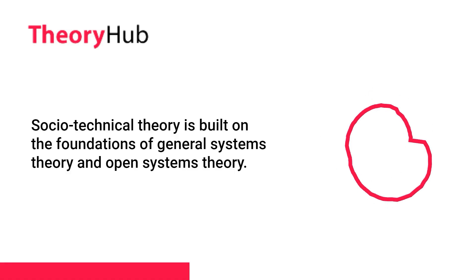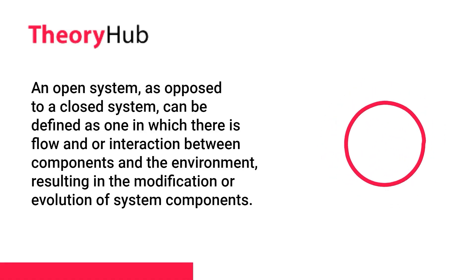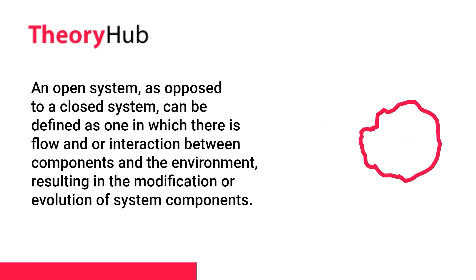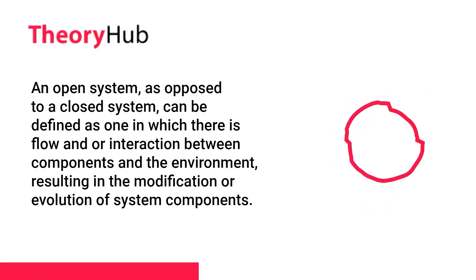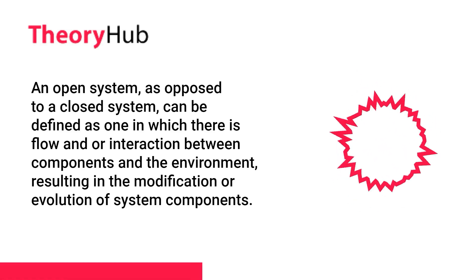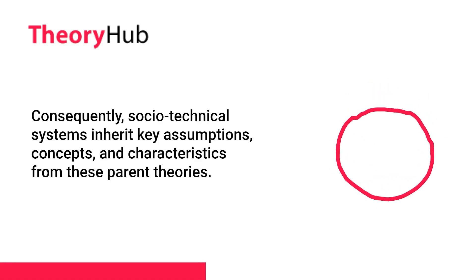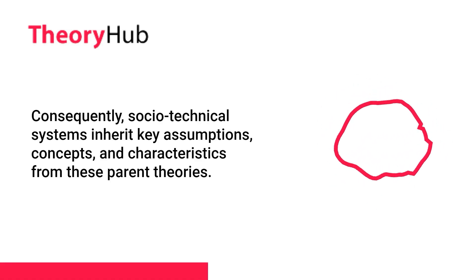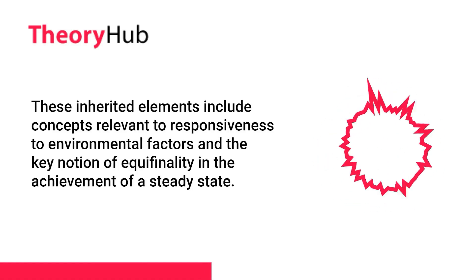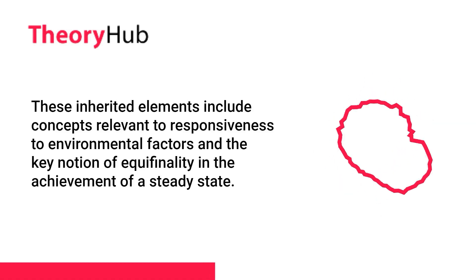Socio-technical theory is built on the foundations of general systems theory and open systems theory. An open system, as opposed to a closed system, can be defined as one in which there is flow and/or interaction between components and the environment, resulting in the modification or evolution of system components. Consequently, socio-technical systems inherit key assumptions, concepts, and characteristics from these parent theories, including concepts relevant to responsiveness to environmental factors and the key notion of equifinality in the achievement of a steady state.